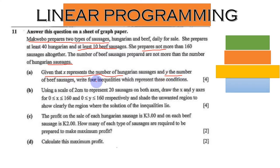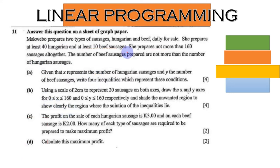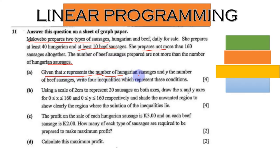It is very important that you read the entire question before you begin to extract your inequalities. After you are done with the passage, if the variables are not given, you come to the first question. In this case the first question says: given that x represents the number of Hungarian sausages and y the number of beef sausages, write four inequalities.